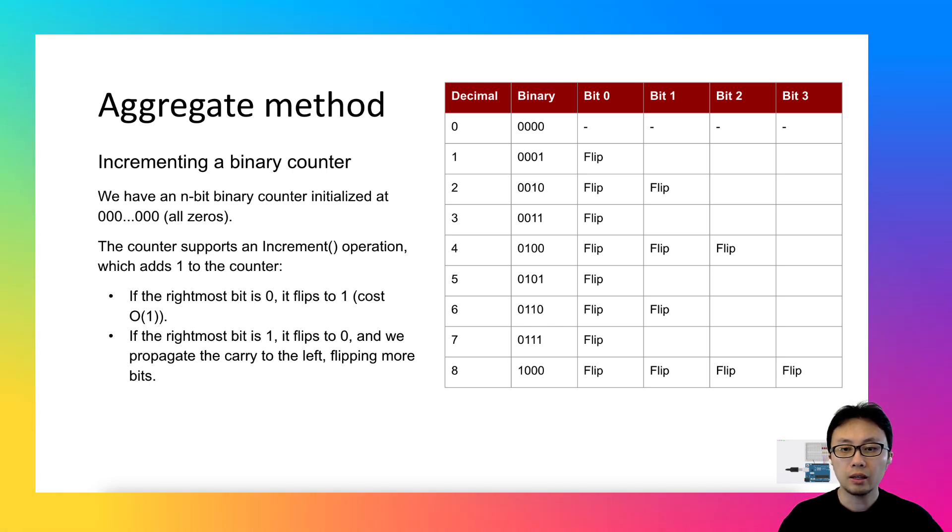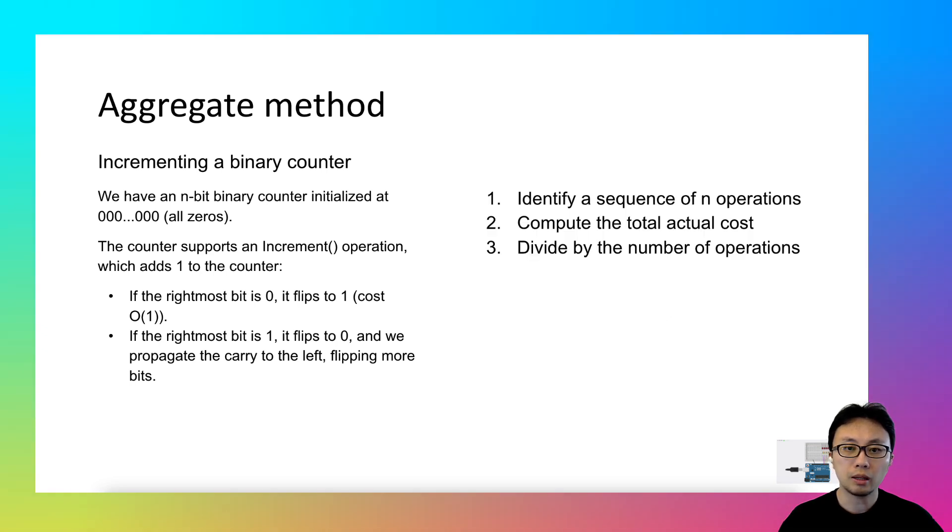If we use the worst case time complexity, I mean the big O of n, it definitely won't represent the cost accurately. That's where the aggregate method comes into play. To apply the aggregate method to this problem, we will follow the 3 established steps.